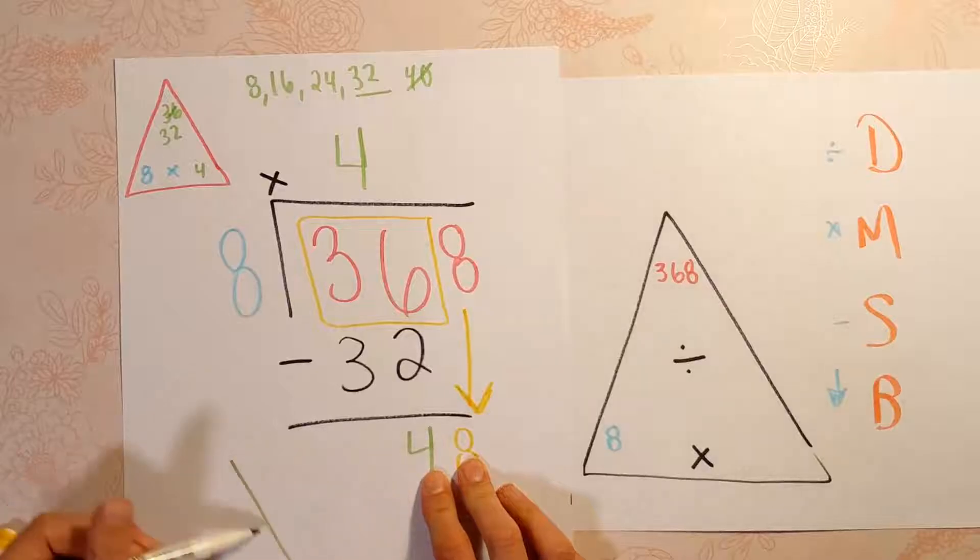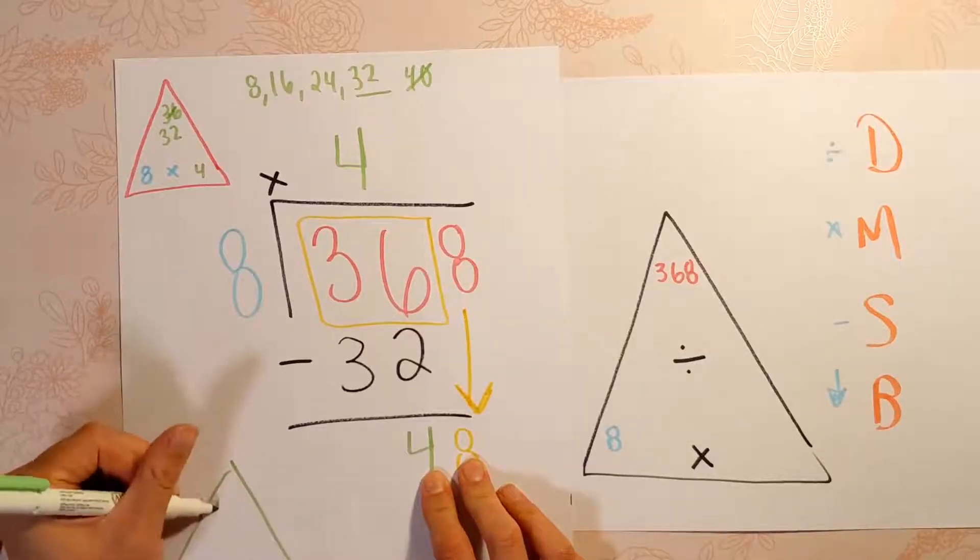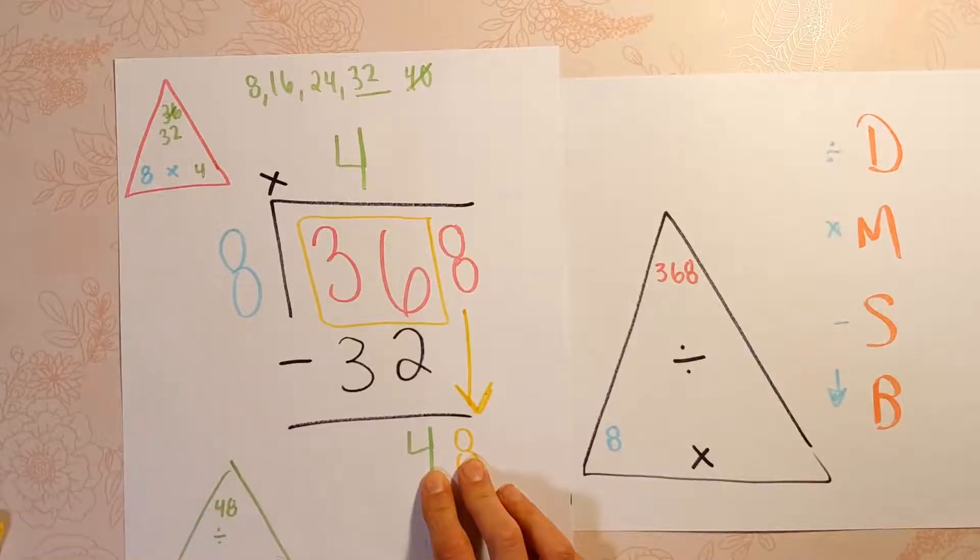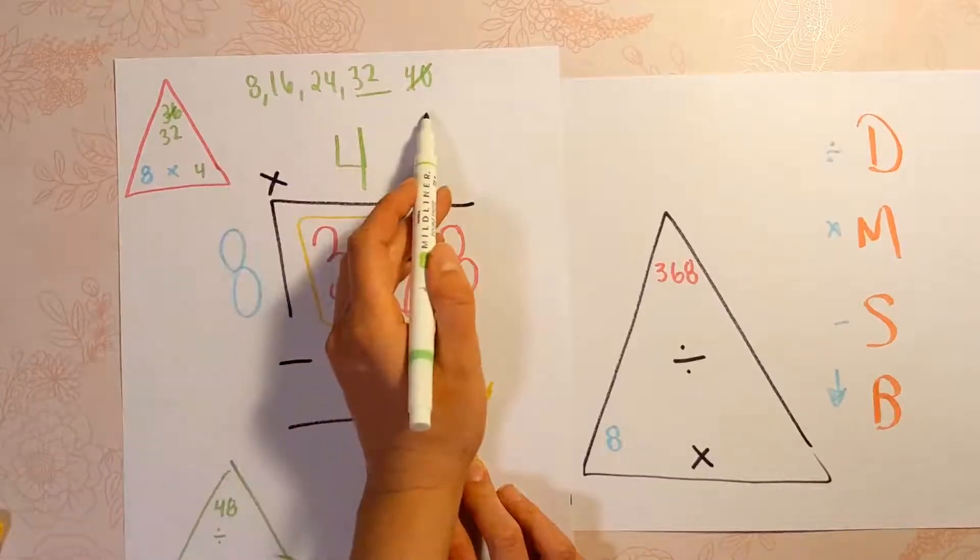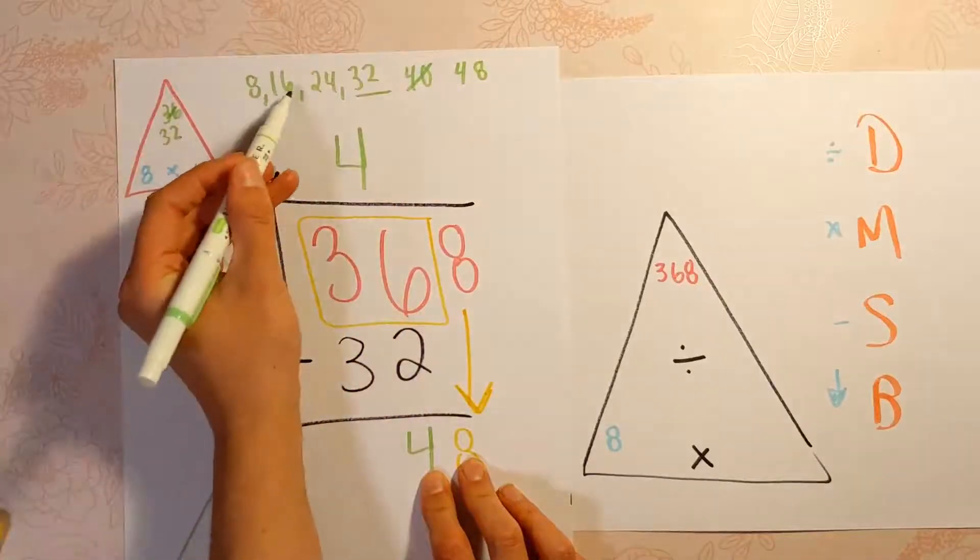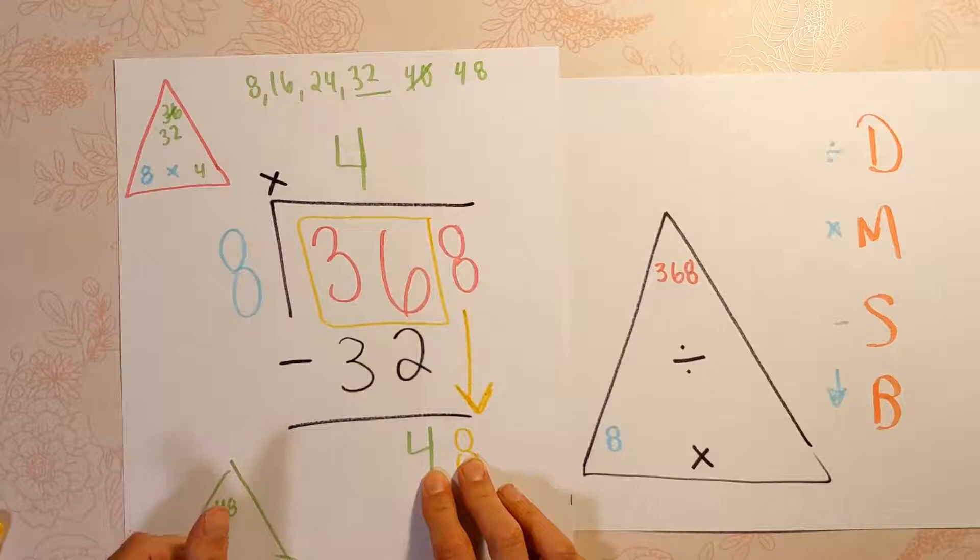Now if you know your multiplication chart, then you know that 48 can be divided by 8. Something times 8 is 48. But you already did some skip counting work up here, so you could just keep skip counting. 1, 2, 3, 4, 5, 6. 8 times 6 is 48.